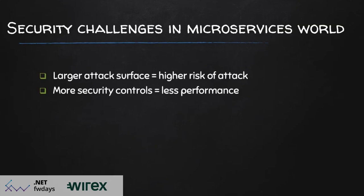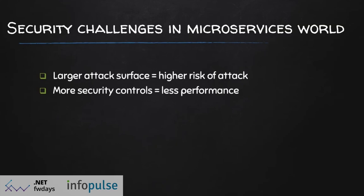Each entry point to each microservice must be protected with equal strength, because the security of a system is no stronger than its weakest link. That leads to the second challenge: more security controls may cause less performance. When validating requests at each entry point — for example, the same authentication — you need to connect to a remote security token service, which can contribute to latency. Some work around this by trusting the network, but over time the 'trust the network' concept has become an anti-pattern, and the industry is moving towards zero-trust networking principles.